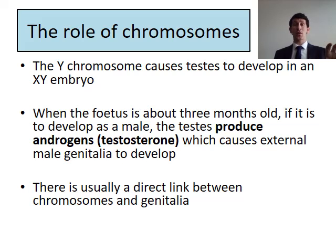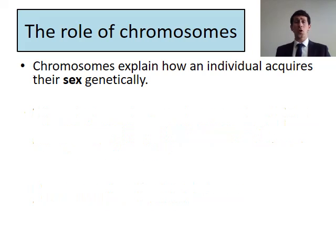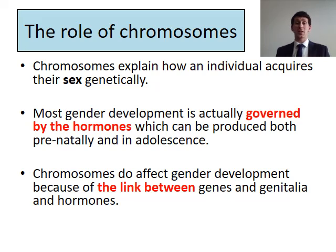There's usually a direct link between your chromosomes and genitalia — XY will have a penis, XX will have a vagina. So chromosomes basically determine the genetic sex of an individual. But most gender development is actually governed by hormones, produced prenatally and during adolescence and puberty. Chromosomes do affect gender development because of that link between genes, genitalia, and hormones — the genetics you have will determine the hormones that are released.